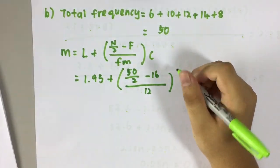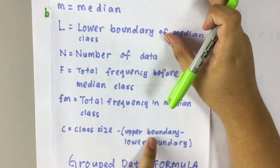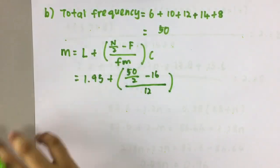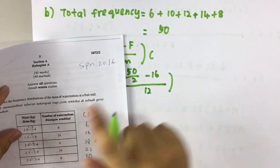Times c. c is class size. Class size is upper boundary minus lower boundary. So class size is 0.5.